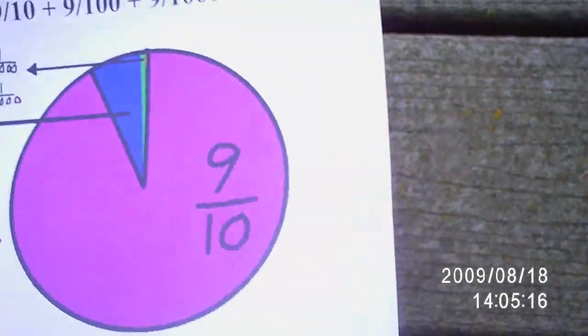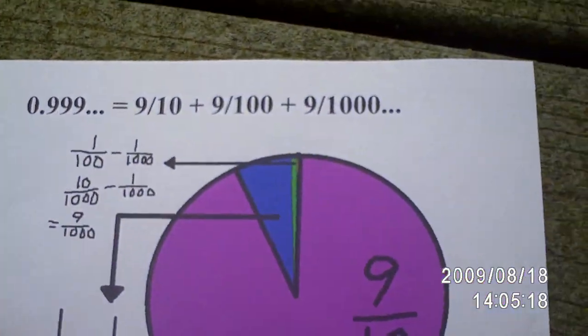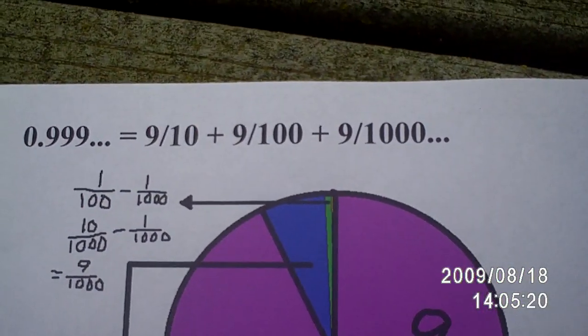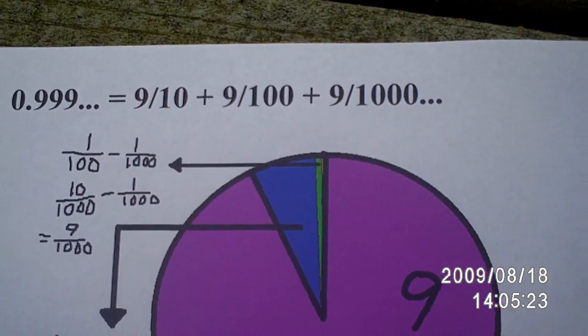And here's the one that's rock solid. Now, 0.9 repeating, that's the geometric series, 9 tenths plus 9 hundredths plus 9 thousandths.